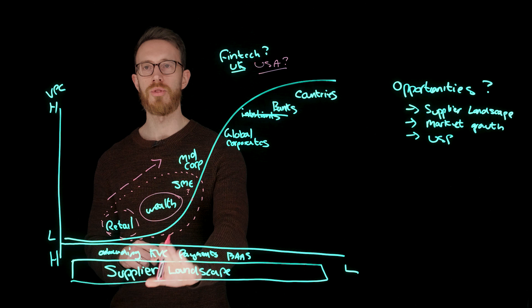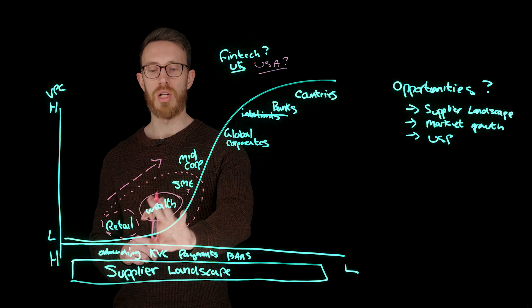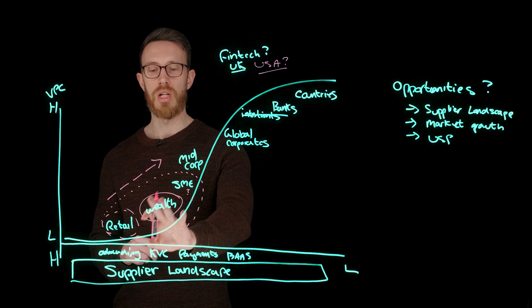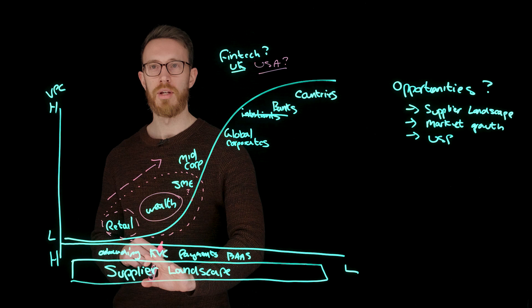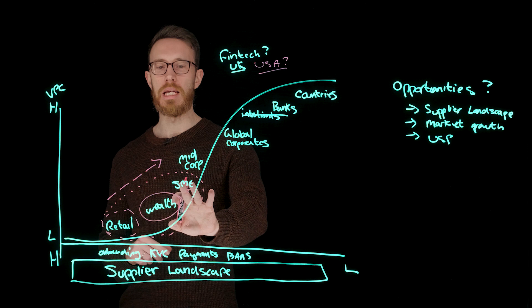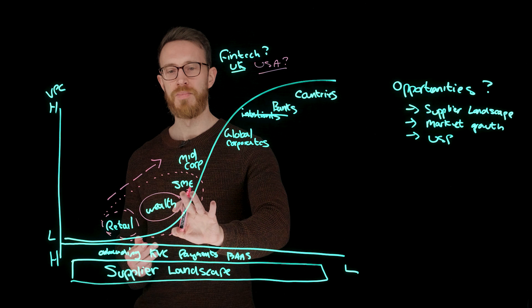By the wealth space, I would consider Acorns. I would consider Robinhood. I would consider the recent work with many others, mergers and acquisitions. And even the mass affluent space that Marcus by Goldman has started to play in as being an area that's been of real focus in the US. Perhaps Chime has played more in the mass market. And have we seen that SME challenger bank in the US yet? I don't know that we have. So the US is in a very different place.